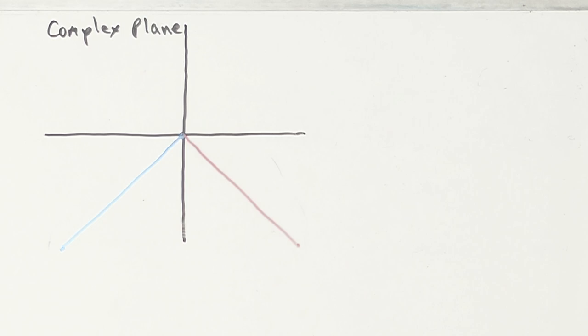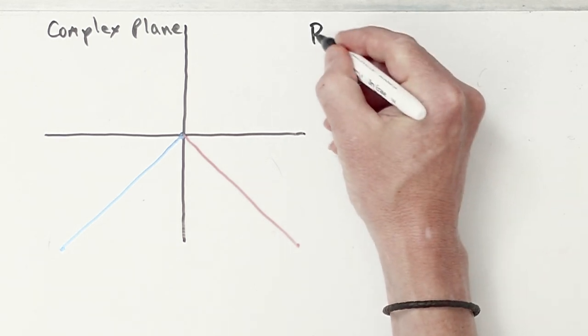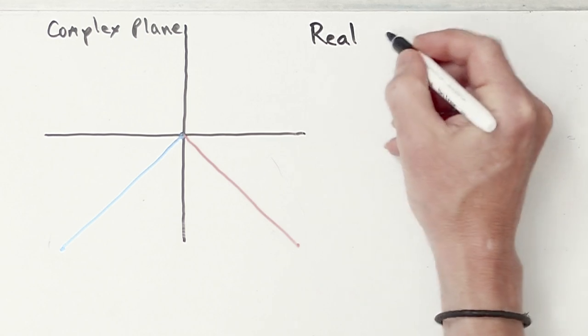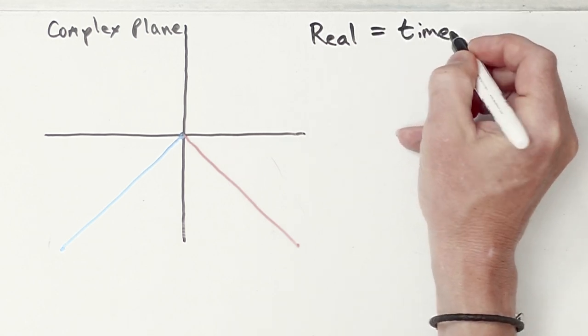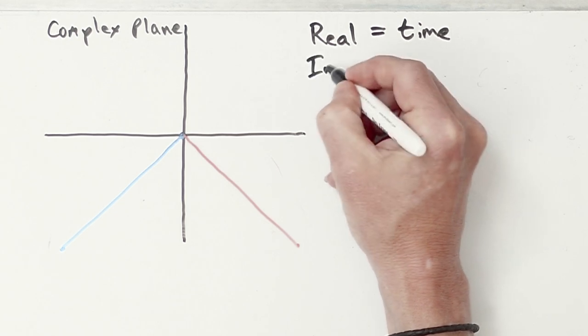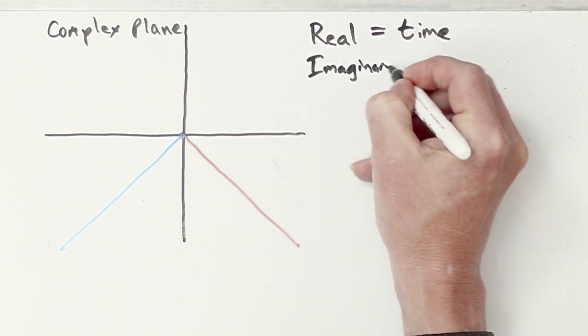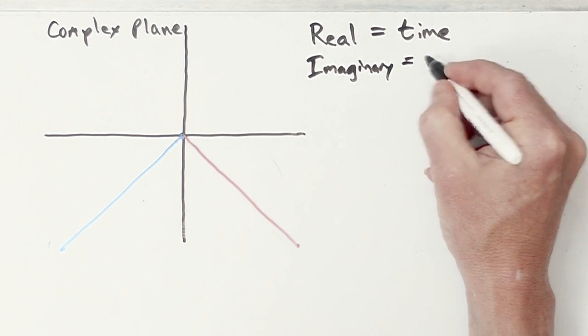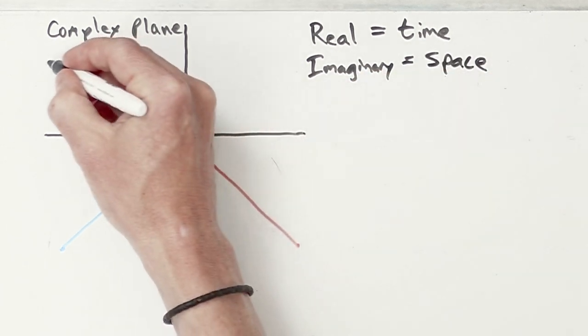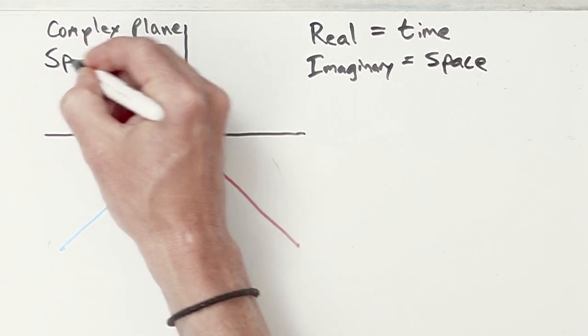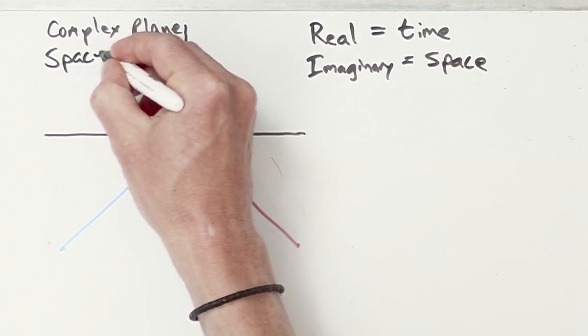And I've lived with that for quite a number of years until I made the following type of map. I said, what if real also means time? What if imaginary also means space? So this is not only complex plane, but it is space-time.